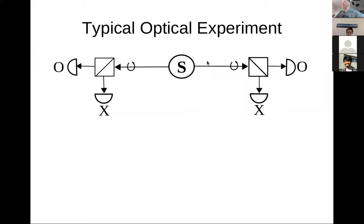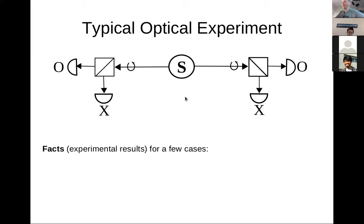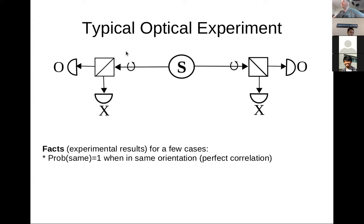In the typical schematic experiment, we have a source that emits entangled particles going left and right. We either rotate the photons themselves or the whole measuring apparatus. If a photon goes through, we label it O; if it reflects, we label it X. The probability of getting XX or OO — the same result on both sides — is cosine squared of the angle difference. When the beam splitters are in the same orientation, delta theta equals zero, we get perfect correlation: 50% of the time OO, 50% XX, with probability one of getting the same result.